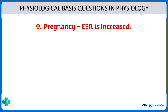The ninth question: why is ESR increased during pregnancy? There are two reasons. First, hemodilution — during pregnancy the RBC count does increase, but the dilution is greater than the increase in RBC numbers, meaning the plasma volume is proportionally more than the number of RBCs. This creates a physiological anemia or hemodilution.